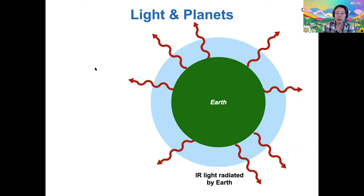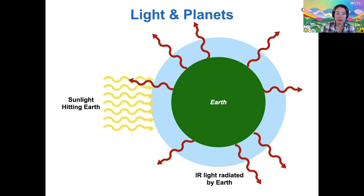Earth is radiating infrared light into space due to its temperature, and that has to be equal in total amount to the sunlight that is hitting it. That's what we would call an equilibrium — a situation where the energy is balanced — so energy in equals energy out.